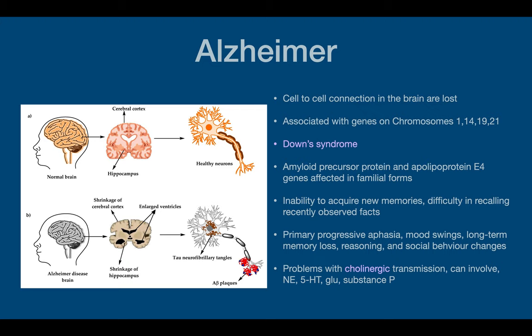Alzheimer's disease involves the loss of cell-to-cell connections in the brain. It's associated with genes on chromosomes 1, 14, 19, and 21. Chromosome 21 is important because patients with Down syndrome will all develop Alzheimer's disease. Alzheimer's occurs when the amyloid precursor protein and apolipoprotein E4 gene are affected, forming beta-amyloid plaques, which build up in the entorhinal cortex and hippocampus — areas associated with memory. When the damage becomes too great, there is an inability to acquire new memories and difficulty recalling recently observed facts.